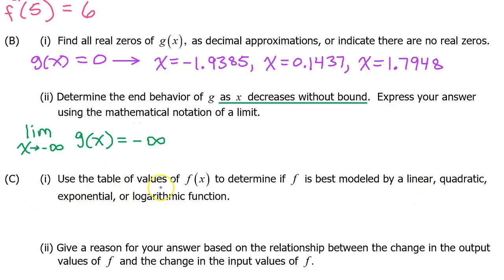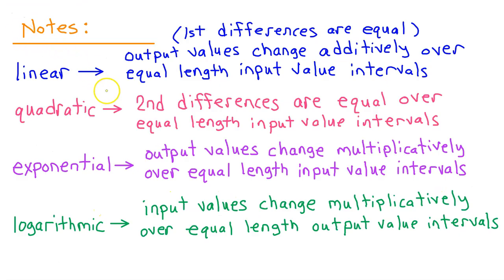Part C.1: Use the table of values of f of x to determine if f is best modeled by a linear, quadratic, exponential, or logarithmic function. Let me take a minute to run through the notes that we need to determine which model is best given a set of data. A linear model will be best if the output values change additively over equal length input value intervals. In other words, if the first differences are equal.